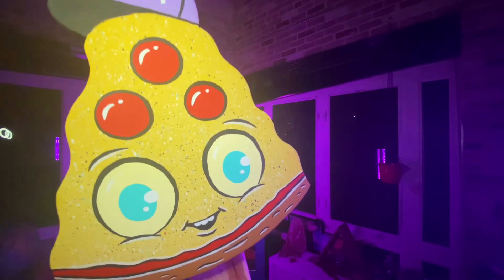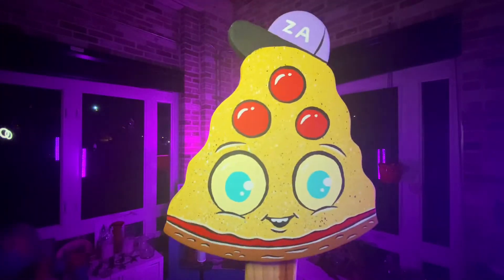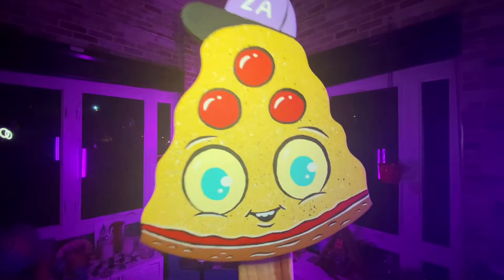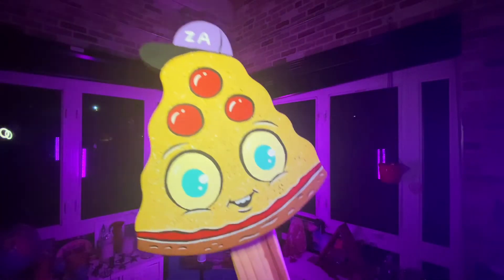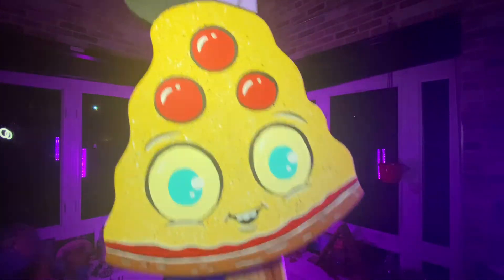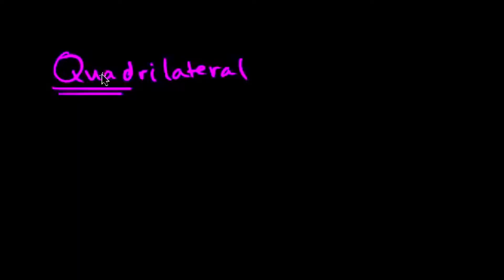So since we already talked about pizza, here's my friend Za to help us out. What I want to talk about in this video is shapes with four sides. And the mathy word for shapes with four sides is quadrilateral. Anytime you see 'quad' as part of a word, it's a good sign that you're dealing with the number four somehow. So a quadrilateral is something that has four sides.